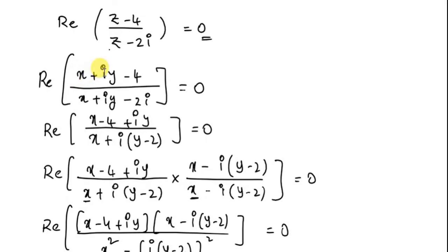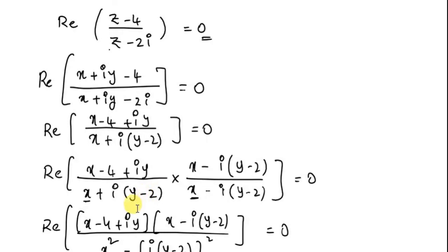Let Z = x + iy, where x is the real part and y is the imaginary part. So the numerator becomes x minus 4 plus iy — where the real part is x minus 4 and the imaginary part is y. The denominator becomes x plus i(y minus 2), where x is the real part and y minus 2 is the imaginary part.